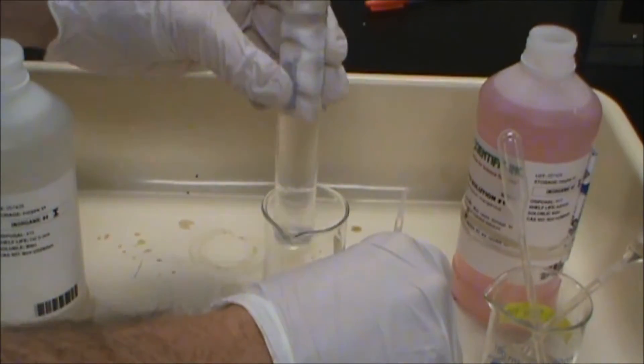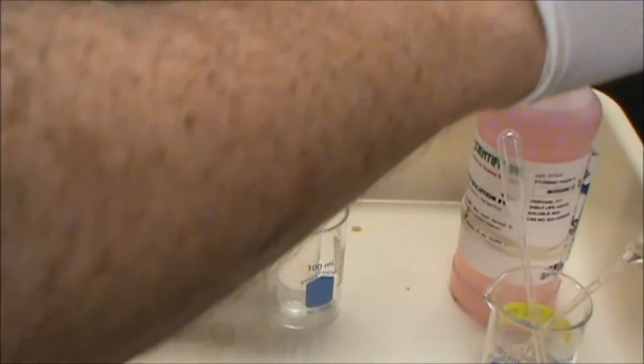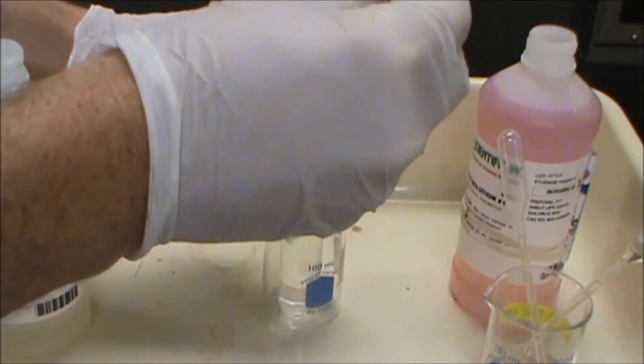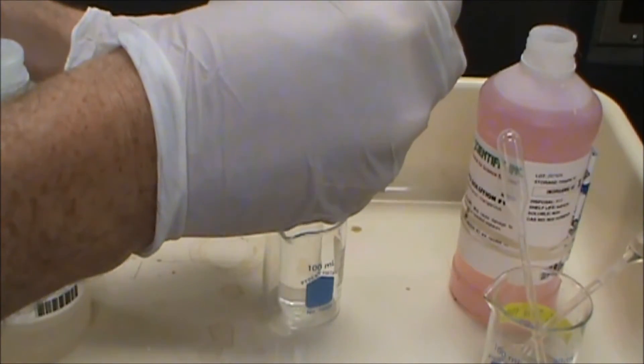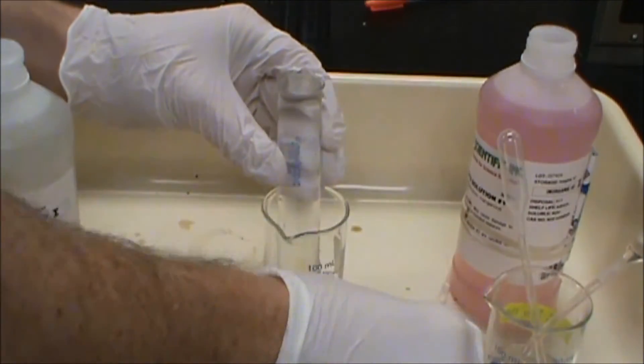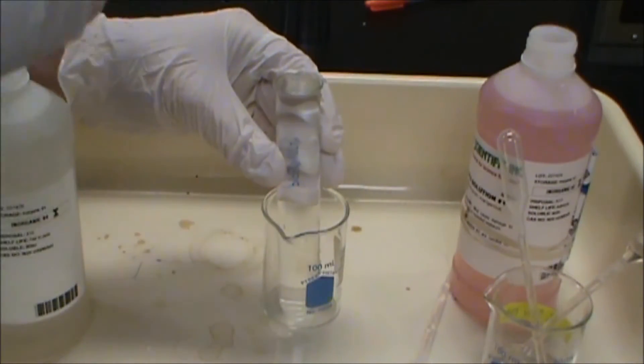So in order to do that, what I want to do is add two solutions. One is manganese sulfate, I just want to add a little bit of Mn2+, and then the second one is going to be a hydroxide and iodide solution.